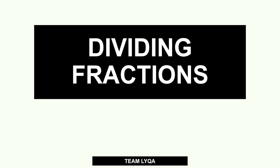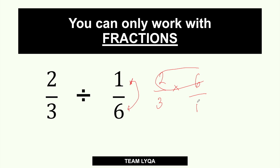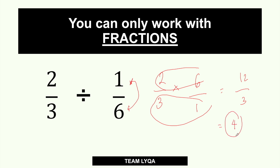Let's talk about dividing fractions. The rule is: you can only work with fractions. It's the same rule as multiplication — dividing is just the reverse of multiplication. The process is like this: if you have fractions, all you have to do is change it into multiplication and flip the second number. So 2/3 divided by 1/6 turns into 2/3 times 6/1. This becomes 2 times 6, which is 12 over 3, so the answer is 4.